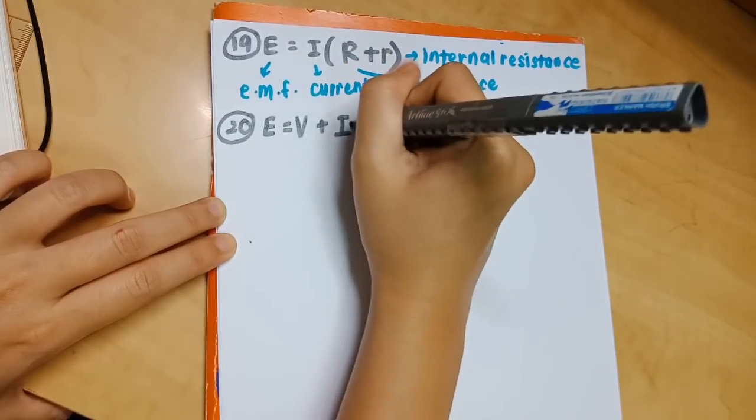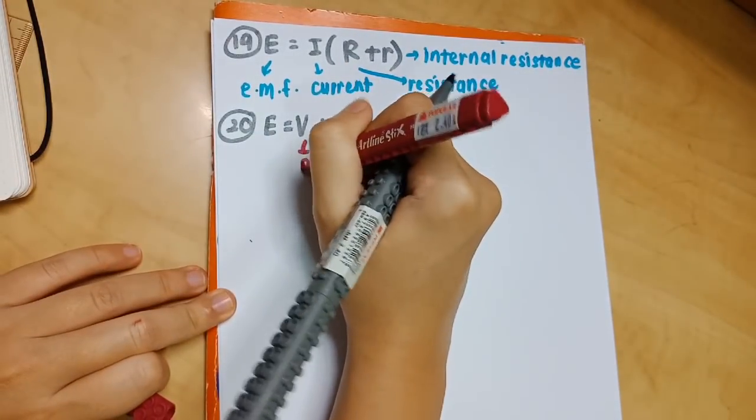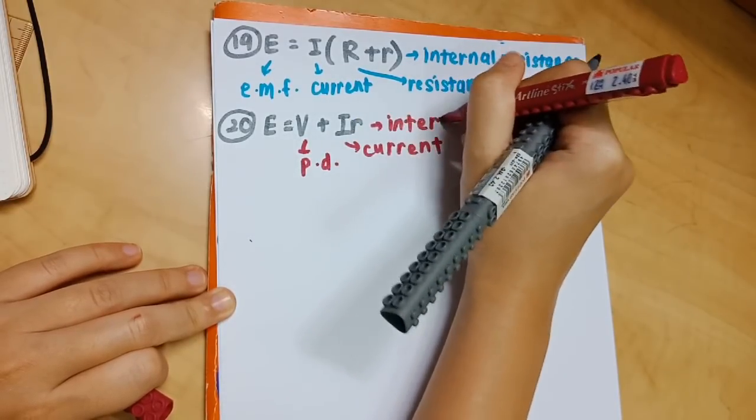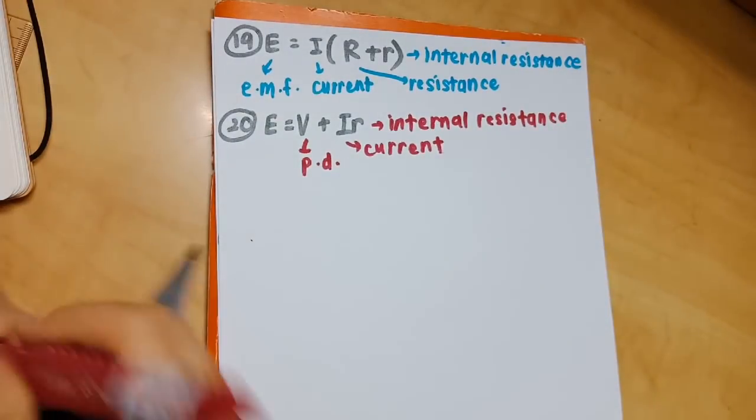Number 20: E equals V plus IR. V is the potential difference, I refers to current, and small letter r refers to the internal resistance.